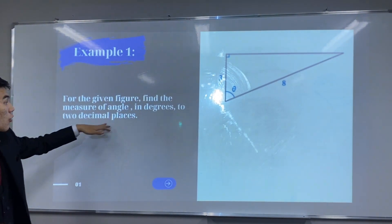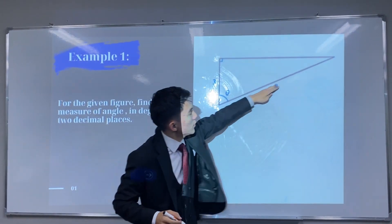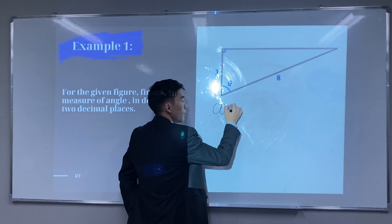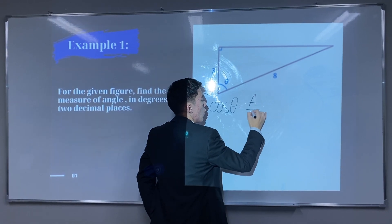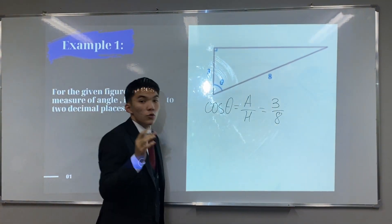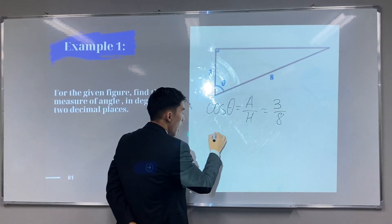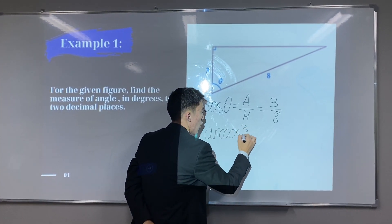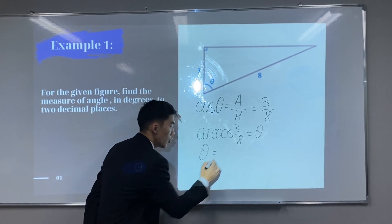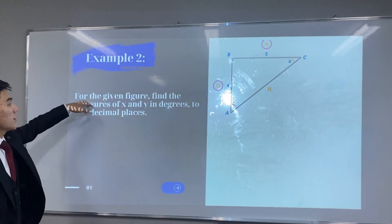For the second example, a figure is given — find the measure of the angle in degrees to two decimal places. We have the adjacent side and hypotenuse, so we use the cosine formula: cosine theta equals adjacent over hypotenuse = 3/8. Using the inverse cosine function: theta equals arccos(3/8), which gives theta equals 67.98 degrees.